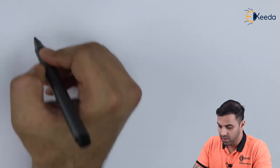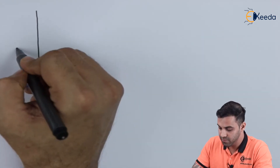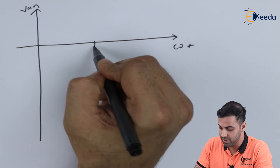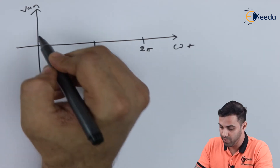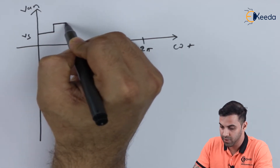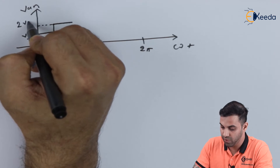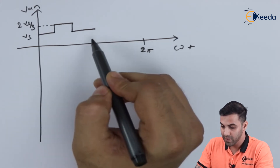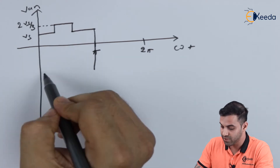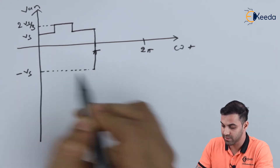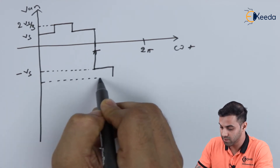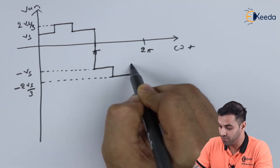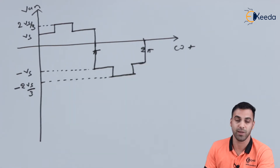Drawing the waveform, with omega-t on the x-axis and VAn on the y-axis, considering this as π and this as 2π: the waveform starts at Vs/3, rises to 2Vs/3, then comes down, and returns to Vs/3 up to π. At π, it alternates to the negative terminal, going to −Vs/3, then drops to −2Vs/3, rises back, and returns to −Vs/3 up to 2π, and the same process keeps repeating.